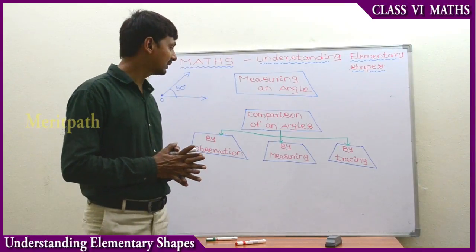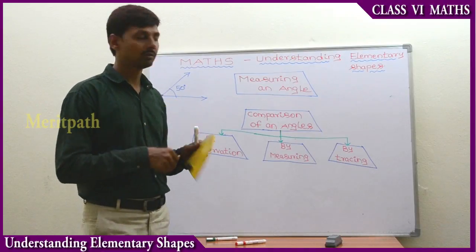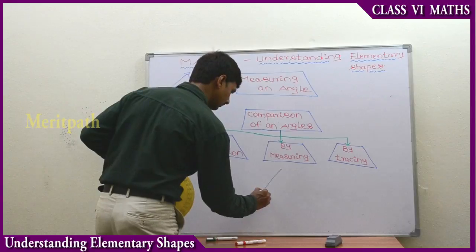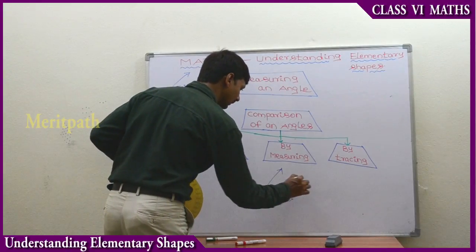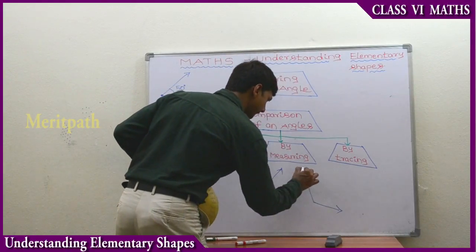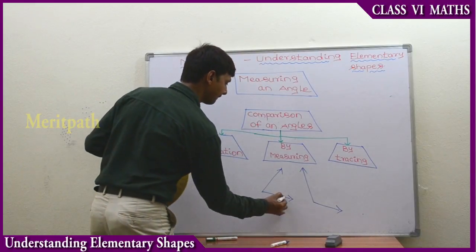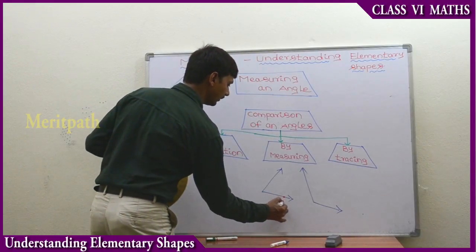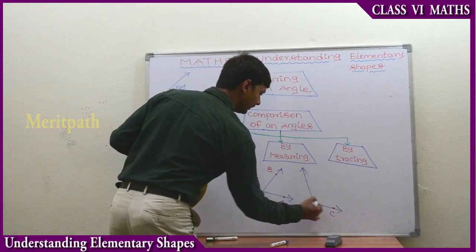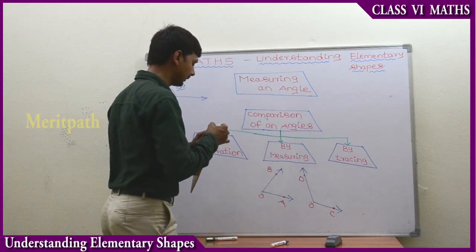We take the protractor and measure two angles. For example, this is one angle and the second angle is this one - angle AOB and angle COD. Two angles.